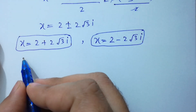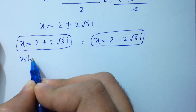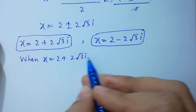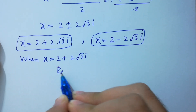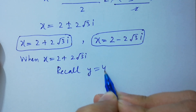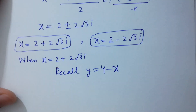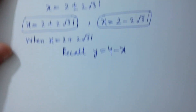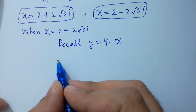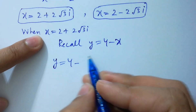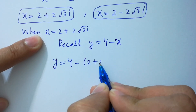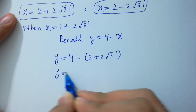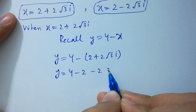When x equal to 2 plus 2√3 i, recall y equal to 4 minus x, which is the third equation. So y equal to 4 minus (2 plus 2√3 i), which gives y equal to 4 minus 2 minus 2√3 i, so y equal to 2 minus 2√3 i.